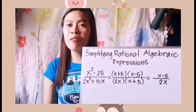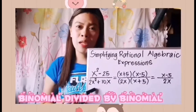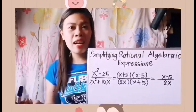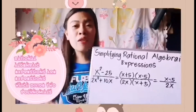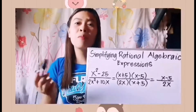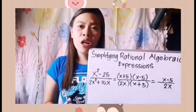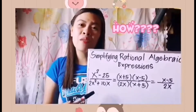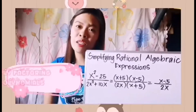Let's have our first example on simplifying a rational algebraic expression having a binomial over another binomial. This is a rational algebraic expression — as I said in the previous vlog, rational algebraic expressions are expressions which consist of polynomials, or expressions which divide two polynomials. We have a binomial over a binomial. Our example is x squared minus 25 all over 2x squared plus 10x. So how are we going to simplify this given rational algebraic expression? Simply by applying our previous learnings on factoring.